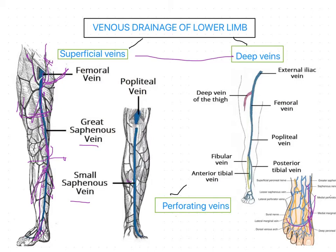The small saphenous vein is also formed from the dorsal venous arch on the lateral aspect. It runs behind the lateral malleolus, travels on the back of the leg, and finally ends into the popliteal vein. There are also a number of unnamed and inconstant tributaries present for all these veins.